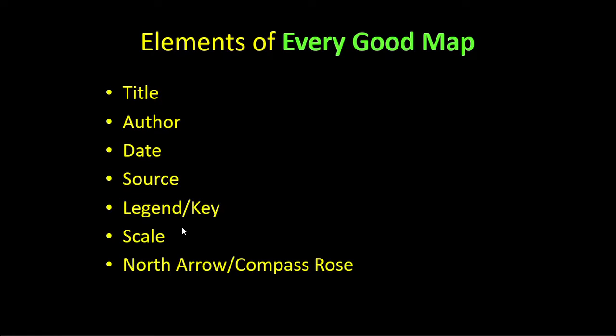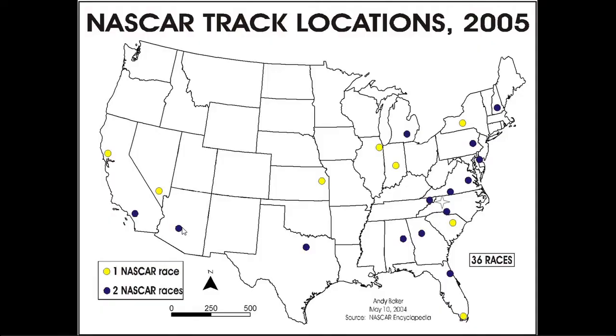Here are the elements that every good map must have. Every map must have: a title, author, date, source, legend or key, a scale, and a north arrow or compass rose.